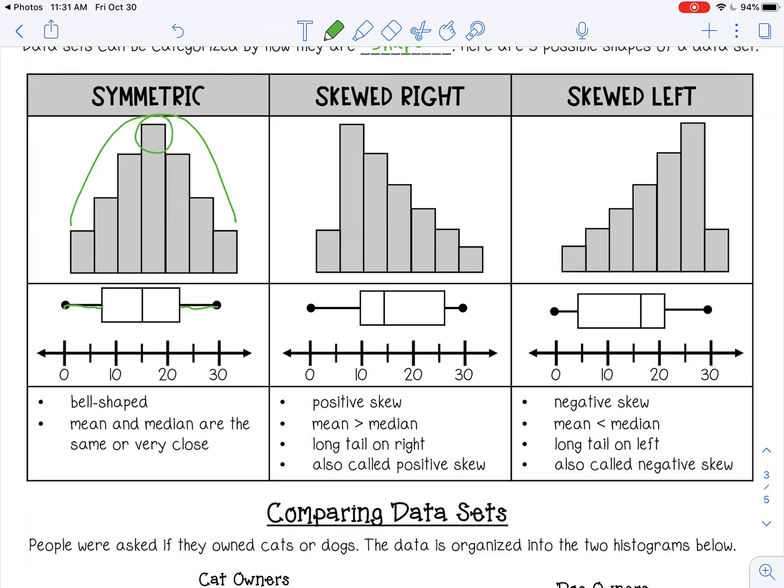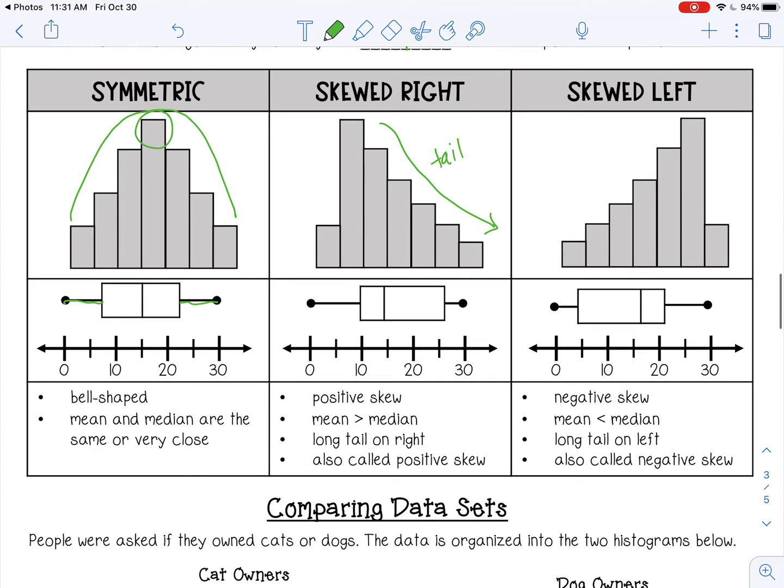And then for skewed right, that means there's going to be a long tail on the right. Now for a box and whisker plot, it kind of looks the opposite. You're going to have a whisker on the left. And then for skewed left, you're going to have a tail and then a whisker on the right.